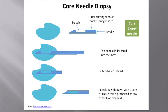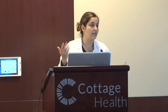Moving on to core needle biopsies. As you see here, the type of needle that's used has a trough in the middle, and it has an outer cutting cannula as well. Usually it's spring-loaded. The needle is inserted into the mass, and then the outer sheath is fired. Subsequently the needle is withdrawn, and then you have the biopsy of the tissue right there in the trough, and then you send that for further study.